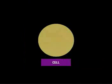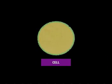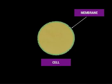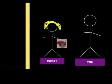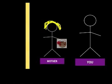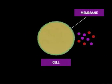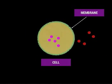The cell has a similar protection known as the cell membrane. Just like you probably wouldn't let a robber into your house, but you probably would let your mother in, so also a cell membrane lets some things in, but not others.